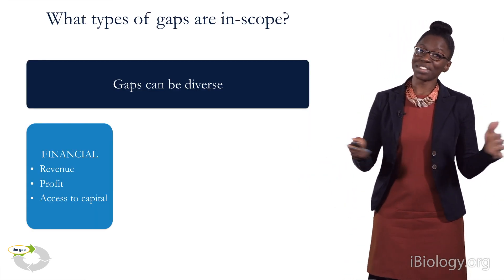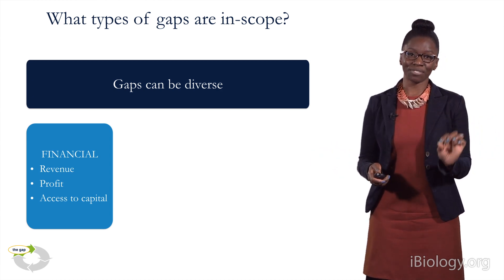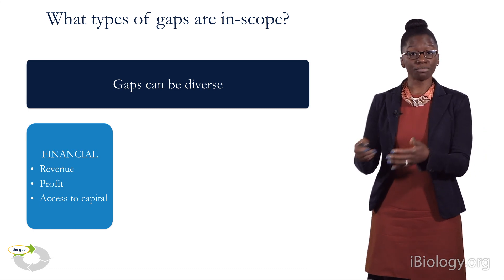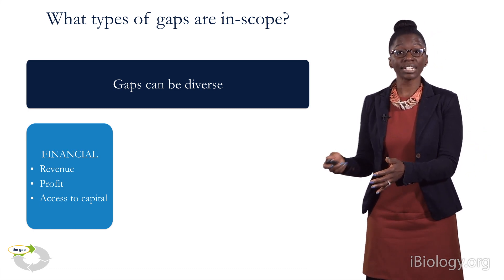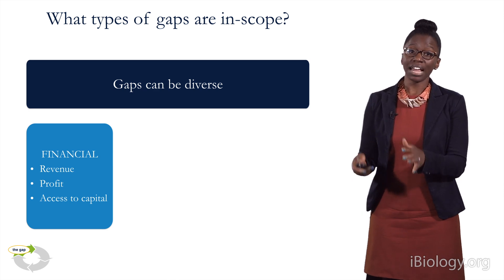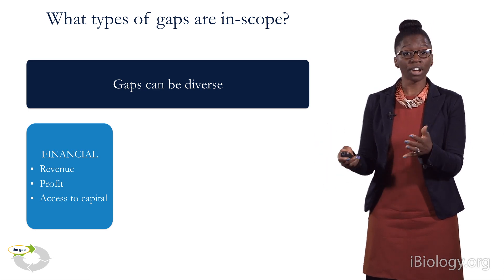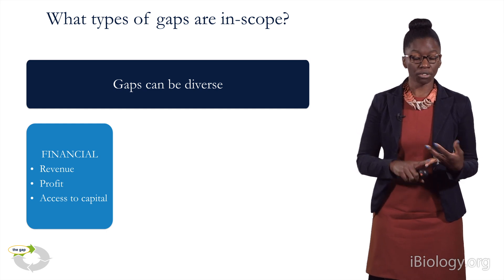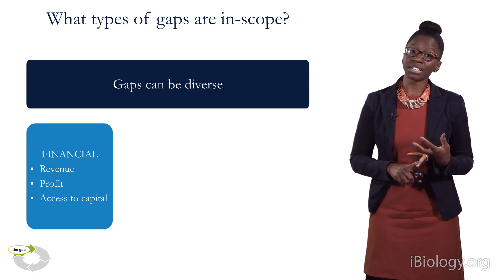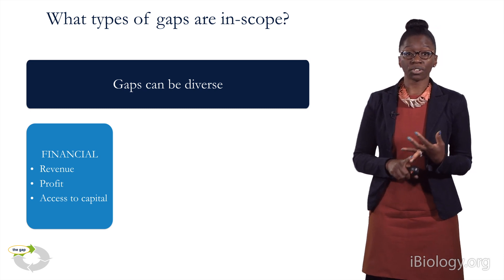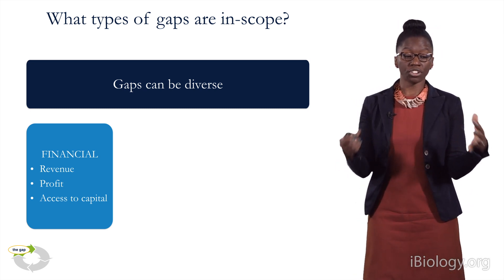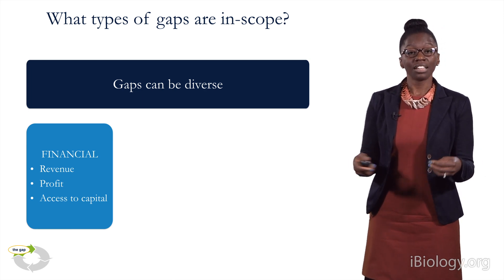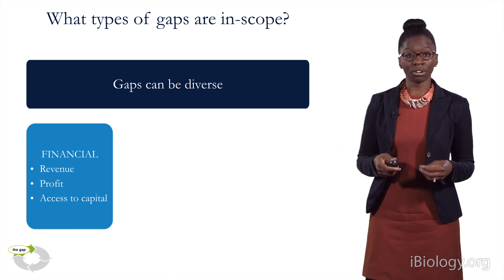One note: gaps can be multivarious — they can be extremely diverse. So they can be financial. You have a business, you know how much money you need to make or how much you're projecting to make, but maybe you're having a shortfall. That's what a gap could be when we talk about financial. It could be a shortfall of revenue, a shortfall of profit, or a shortfall of access to capital. For example, perhaps you need some additional real estate, perhaps you need additional equipment, and you don't have the ability to get there. These are all called financial gaps.